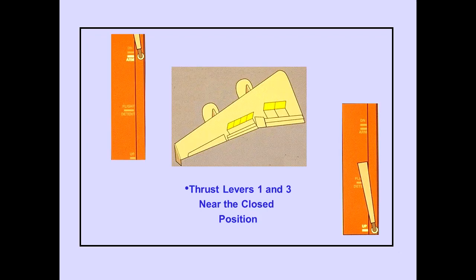On the ground, with the speed brake lever in the arm position, all spoiler panels automatically move to the up position when thrust levers one and three are near the closed position. The speed brake lever automatically moves to the up position.